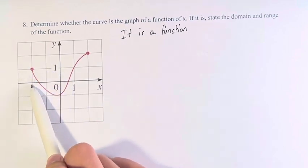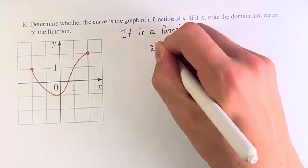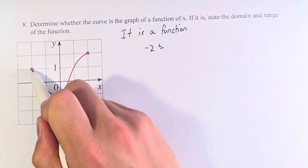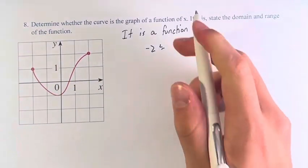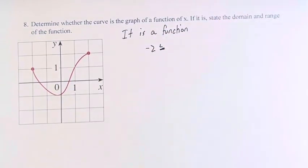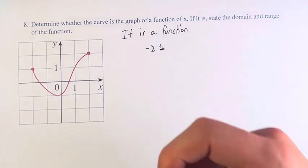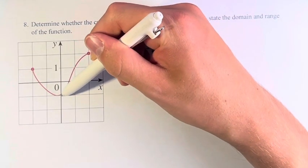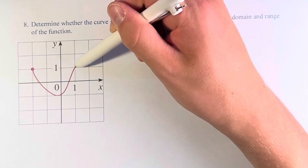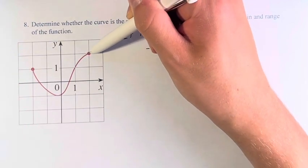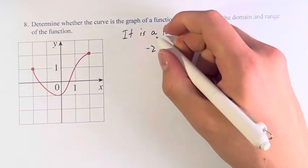So we start here at x equals negative two. We have a closed circle here, so that means it's inclusive, which is why I drew less than or equal to. And as we pass through, going more and more increasing on the x axis, we go all the way to this point at x equals positive two.